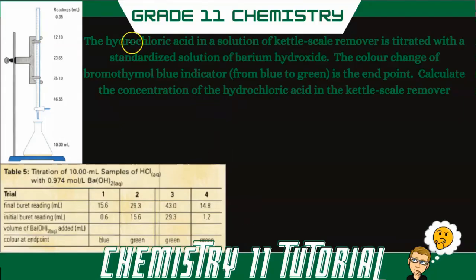So in this question, we have hydrochloric acid in a solution of Kettle Scale Remover, and it's being titrated with a standardized solution of barium hydroxide. That barium hydroxide has a known concentration, right here, of 0.974 moles per liter.